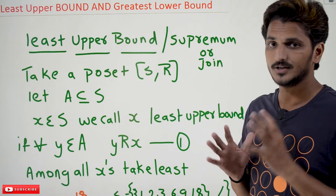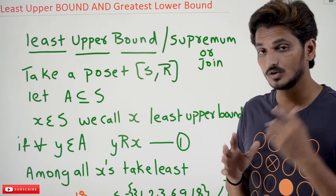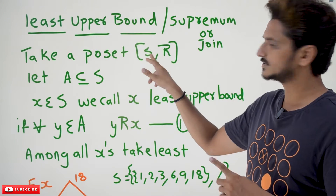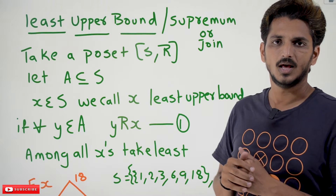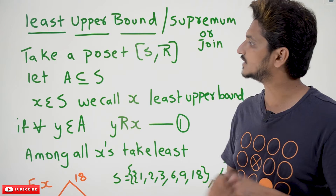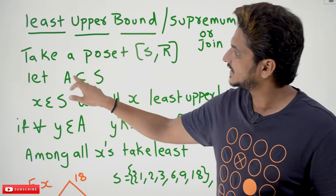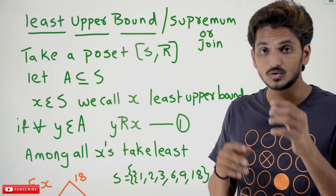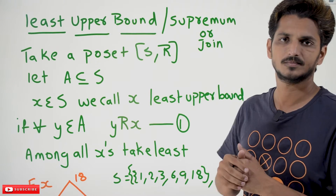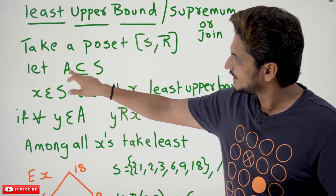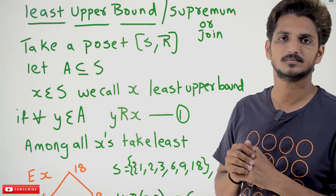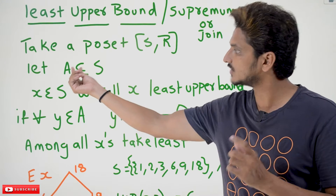The definition alone is not going to help you understand better; with an example you will get clarity. Let's take a poset S, R — S means set of elements, R means relation. If it is a poset, you can construct the Hasse Diagram. From the poset, let A be a subset of S, meaning you take some elements in A that are a subset of S. On these elements, we are going to identify the Least Upper Bound for this subset A.